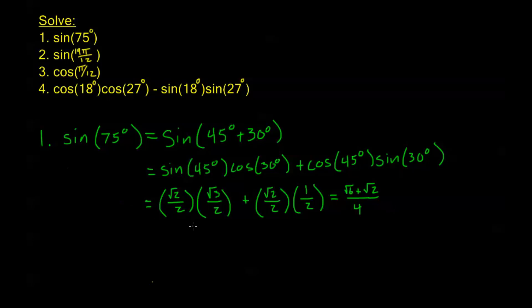So sine of 75 degrees is the square root of 6 plus the square root of 2, all over 4. This shows we're going to be able to work with a lot more angles than before just from these addition and subtraction formulas — anything that's a sum or difference of the angles we already have, we can now solve.